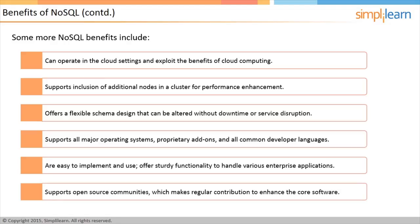Thriving Open Source Community: For an open-source NoSQL database, having a vibrant community is essential for making regular contributions to enhance the core software. Open-source communities generally provide excellent quality assurance (QA) testing, sometimes eliminating the need for software companies to hire and retain a QA team. Activities such as participation on mailing lists, technical forums, technical discussions, and conferences help encourage a thriving open-source community.